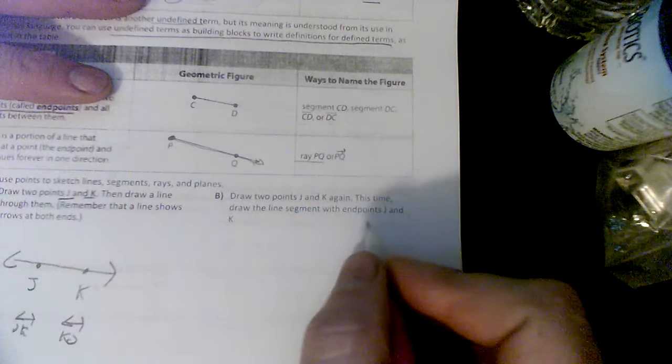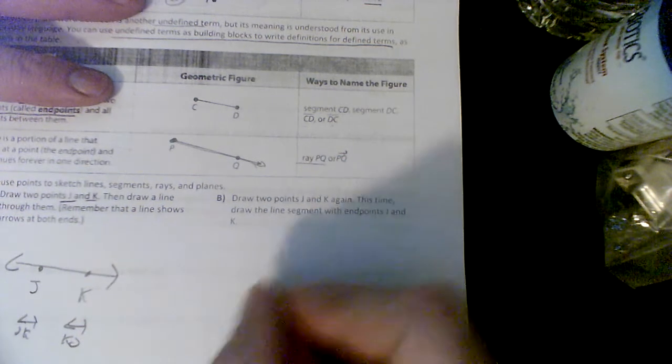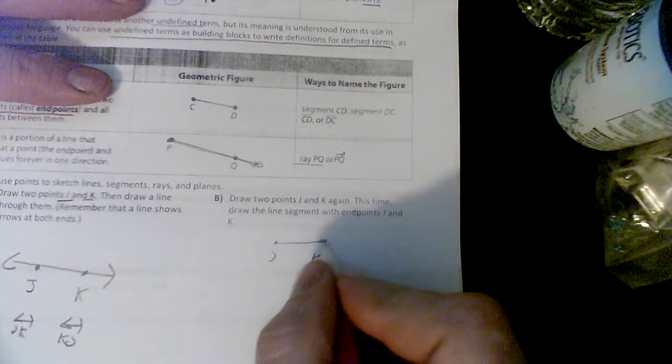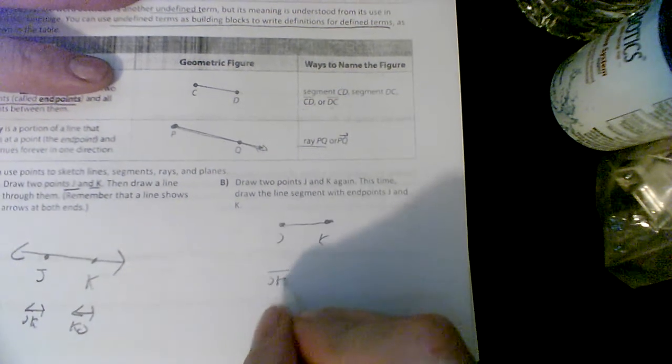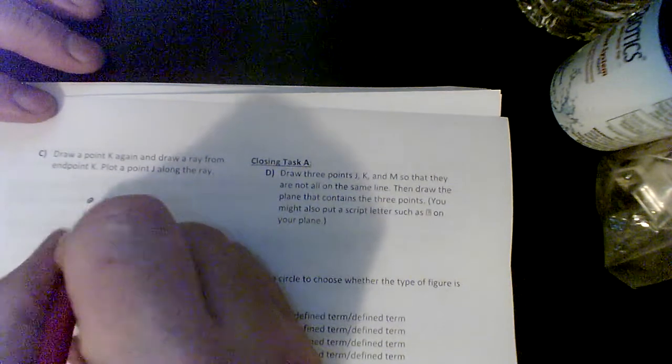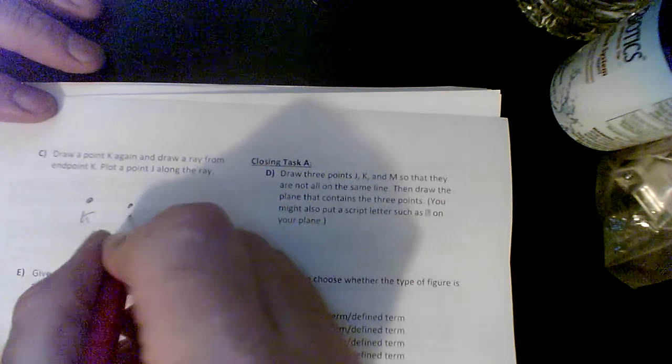Draw two points J and K again. This time draw a line segment with endpoints. Point J and K, and then I would just connect them. So I could say line segment JK, I could say line segment KJ, doesn't matter. Moving on to the back side.